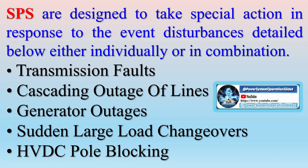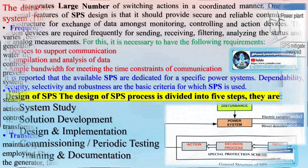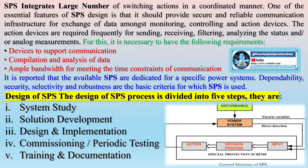For purposes of analyzing power system security, it is helpful to classify system operating conditions into system states. In the normal state, all system variables are within the normal range and no equipment is overloaded; the system operates securely and can withstand predefined contingencies. In the alert state, system parameters are still within admissible ranges but the system no longer meets the criteria for a secure state, i.e., it is no longer N-1 secure. The system reaches this state after an N-1 contingency and requires application of remedial actions to return to the secure state.